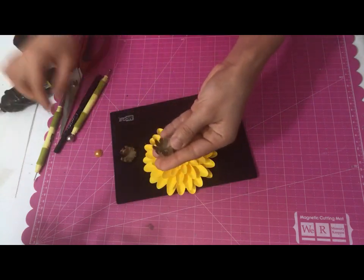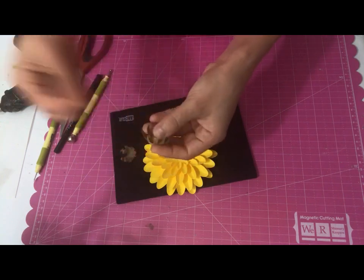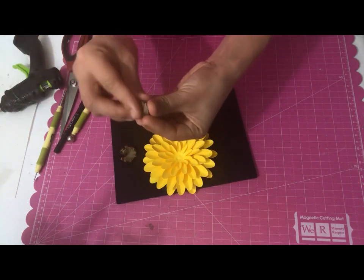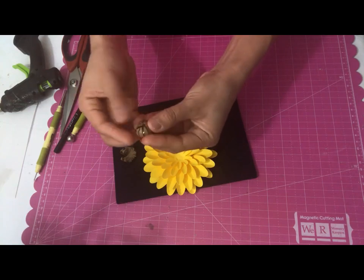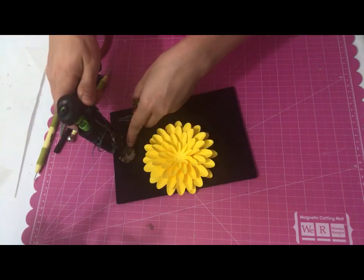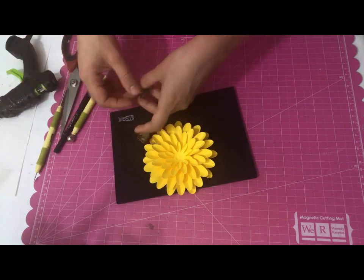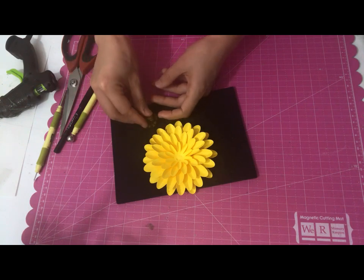For the center, it's optional to have a gem in the middle. If you don't have it, then just simply put the templates that are already curled in the middle.